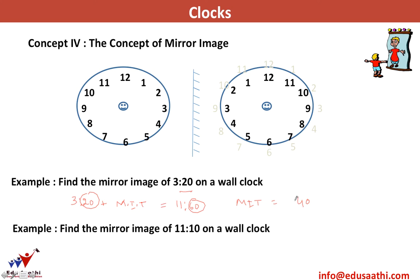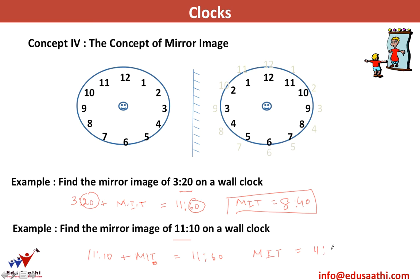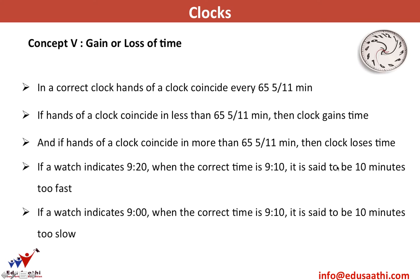Example: find the mirror image of 3:20. Mirror image time = 11:60 − 3:20 = (60 − 20) minutes and (11 − 3) hours = 8:40. Another example: mirror image of 11:10. Mirror image time = 11:60 − 11:10 = 0:50, which is actually 12:50. When the hours come out to 0, replace it with 12.